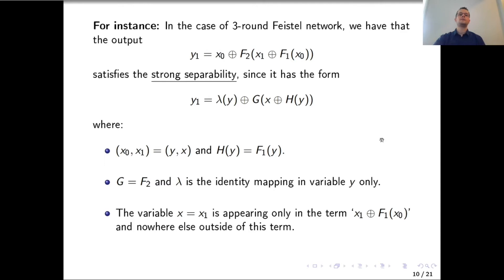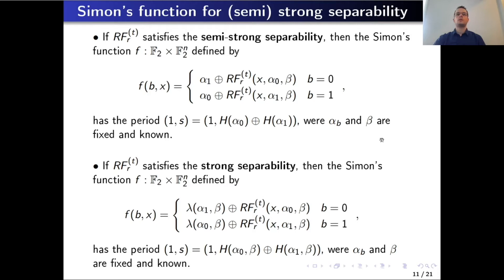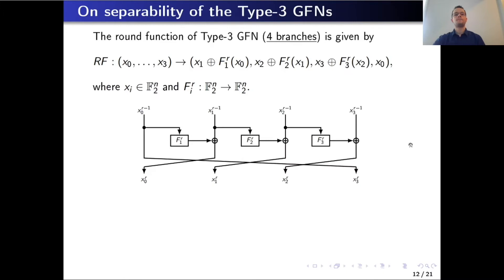The main results related to semi-strong and strong separability show that one can always construct a Simon's function which has a period. One should recall that for semi-strong separability, lambda was not available, but due to the placement of input blocks, we are still able to construct a periodic Simon's function.